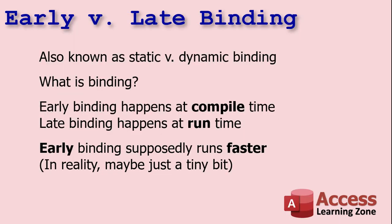It's basically matching up your function calls with what the programmer programmed the functions to be. Early binding happens at compile time — when Access looks at all your code and compiles it into machine language, it can check all the references and make sure you got all your variables spelled right. Whereas late binding happens at runtime. It doesn't do any pre-compiling. Late binding just accepts the fact that you know what you're doing.